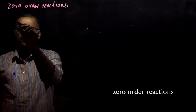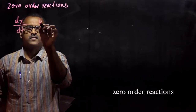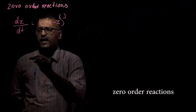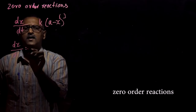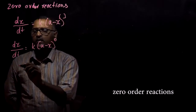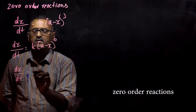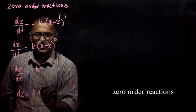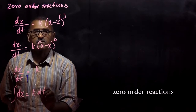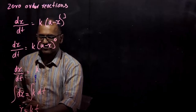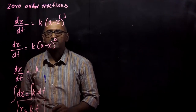Now let us see the zero order reaction. Recalling our general rate equation dx/dt equals K into (A minus X) to the power of the exponent, for a zero order reaction we write dx/dt equals K into (A minus X) to the power of 0. This simplifies to dx/dt equals K, or dx equals K dt. Upon integration, X equals Kt. This is the simple relation for a zero order reaction.